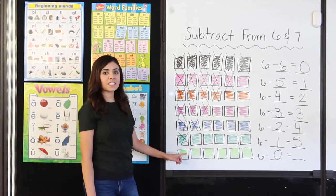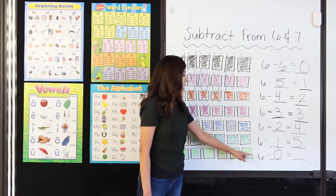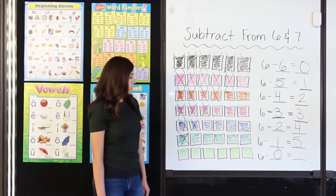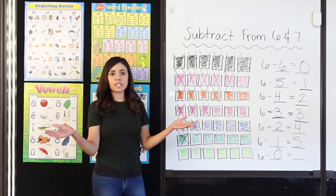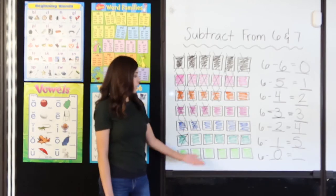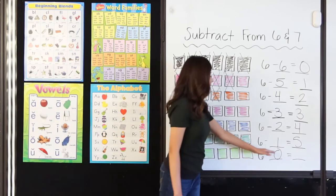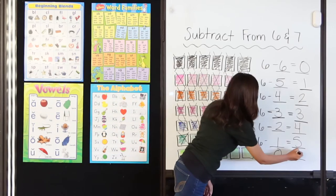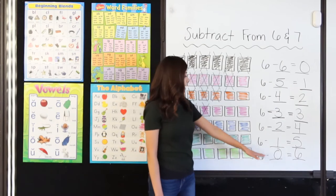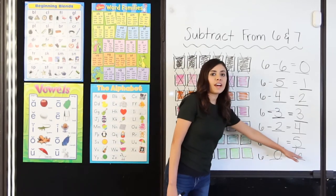Here I have 6 light green squares — 1, 2, 3, 4, 5, 6. I am going to cross off 0. Okay, so 0 means none — I am not crossing any off. So how many do I still have? 6. 6 minus 0 equals 6. And if you remember the rule about 0, a number minus 0 equals that number.